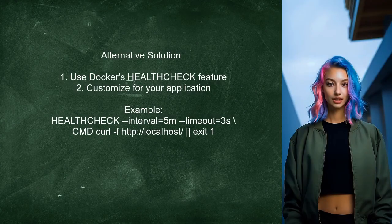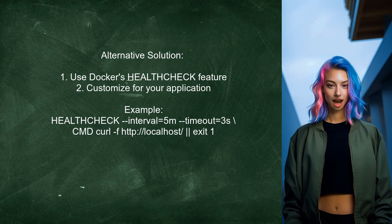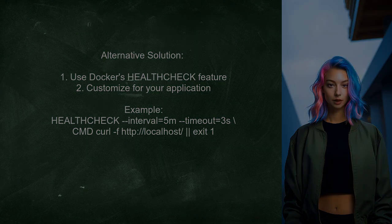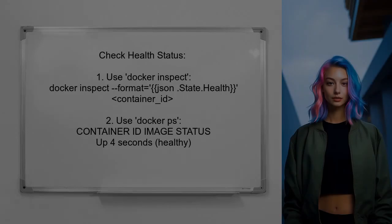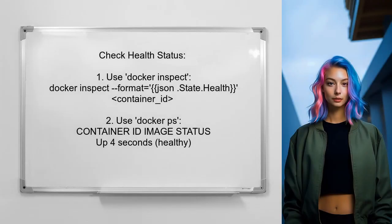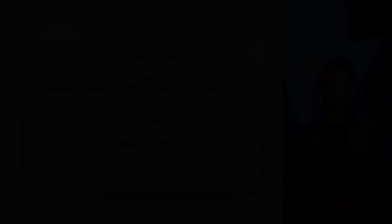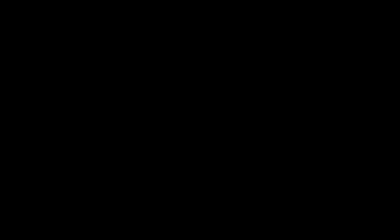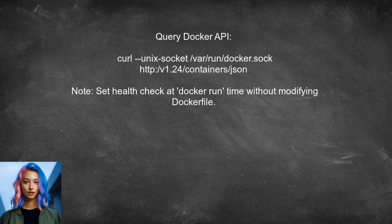Another approach is to utilize Docker's built-in health check feature, which allows you to customize health checks for each application. You can check the health status of your container using the command Docker inspect, or by looking at the status column in Docker PS. Additionally, you can query the Docker API for container status, which can be done with a simple curl command.